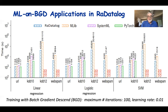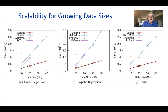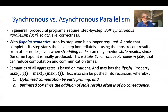Scalability is also better, as those graphs show. Another encouraging result is the possibility of asynchronous parallelism. In general, procedural programs require step-by-step bulk synchronous parallelism to achieve correctness. With fixed-point semantics, step-by-step synchronization is no longer required — a node can start the next step immediately using the most recent results from other nodes. Even straddling nodes can only provide stale results since the same fixed point is finally produced. This state-synchronous parallelism can reduce computation and communication time.